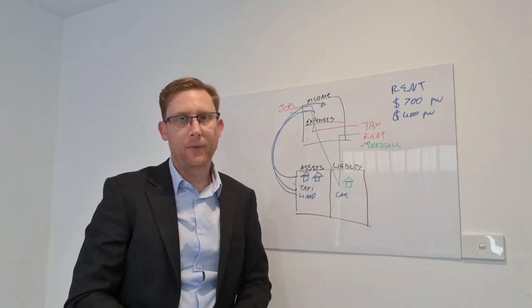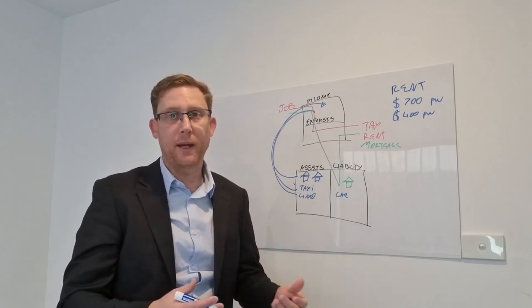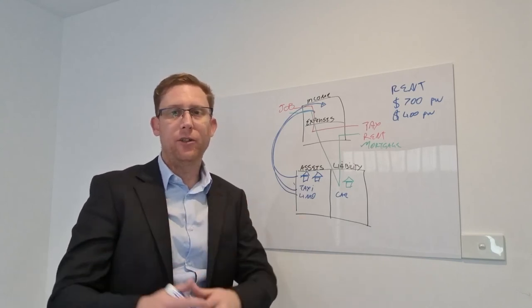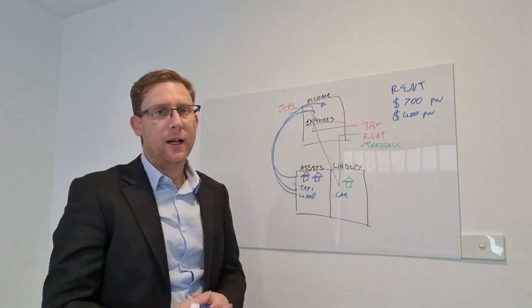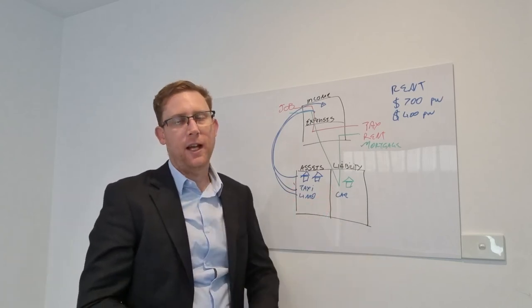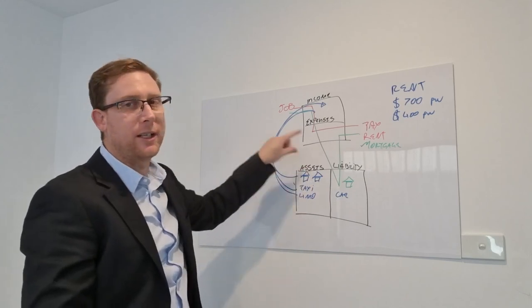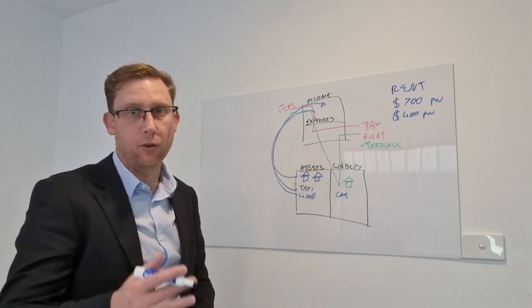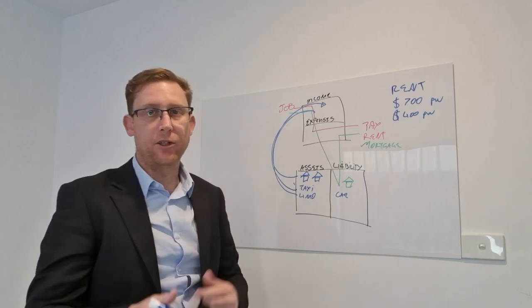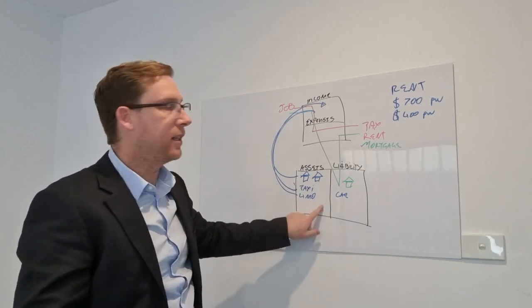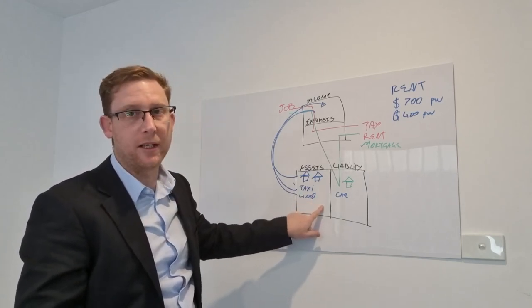Another thing you could do is, say for example that property that you buy has a granny flat, or perhaps you could have a studio at the back or a detached section that you could rent out as an Airbnb. That would then turn that part of the house into an asset, and so therefore it's making you money or at least subsidizing the cost of your living. Those are just a few different things that you can do.